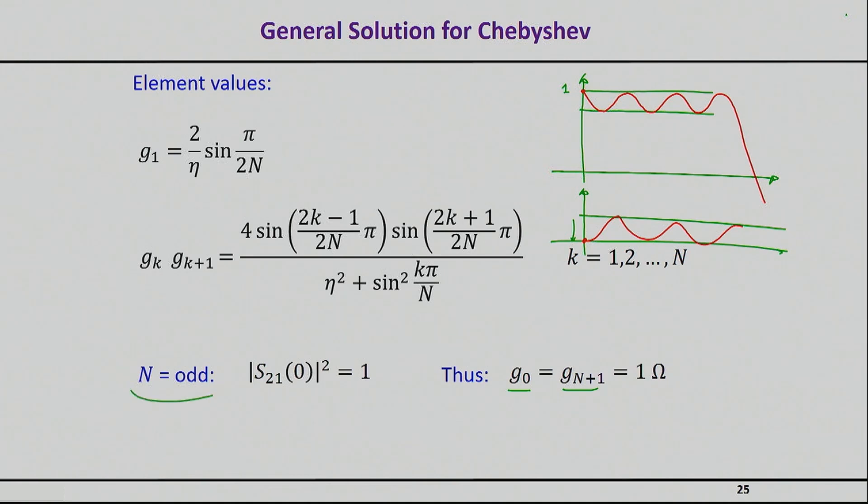So it turns out that if you choose an odd order polynomial—3, 5, 7, whatever—your S21 at 0 frequency will be equal to 1. So this is the case for an odd order, and in that case your load will actually be the same as your source impedance.